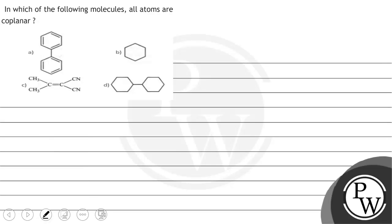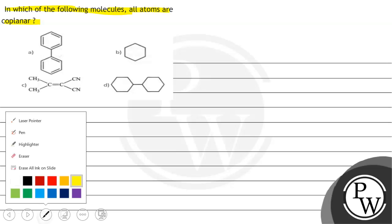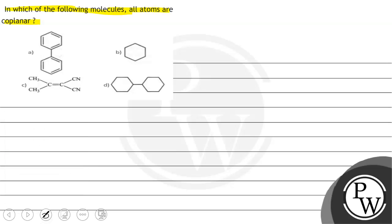Hello, let's set the question. The question says: in which of the following molecules are all atoms co-planar? We will solve this question. First of all, we will see what will be the key concept in the question.